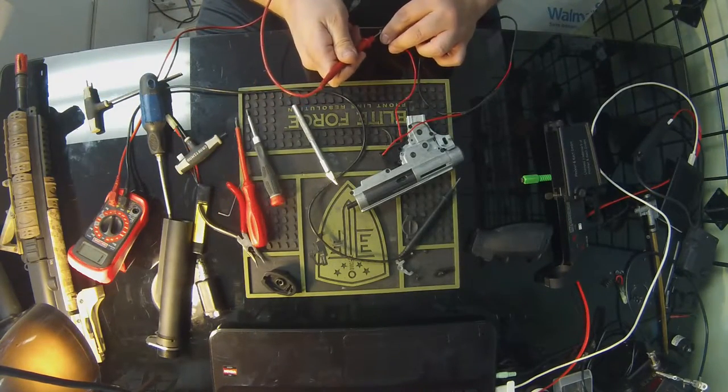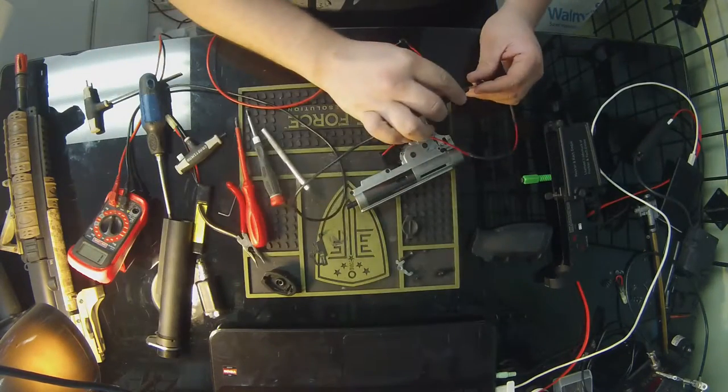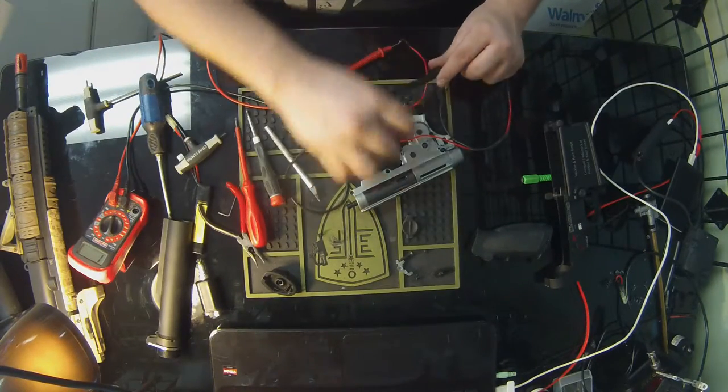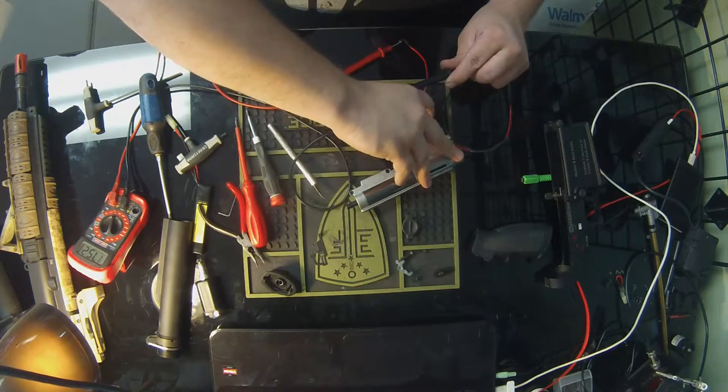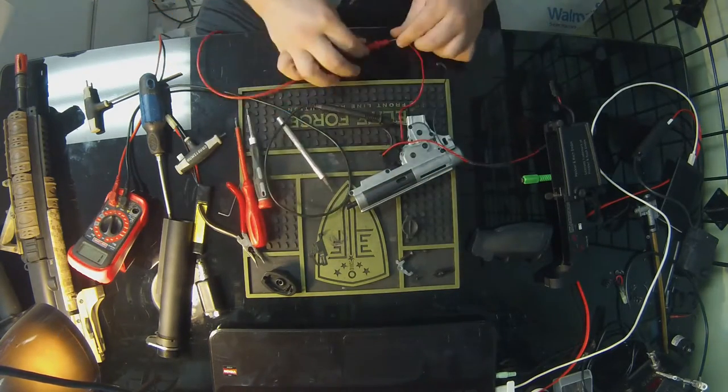Let's check continuity again. We're going to hook up the voltmeter - positive to positive. Pull the trigger. And as you guys can hear the beep, we're good to go. We can get it assembled again.